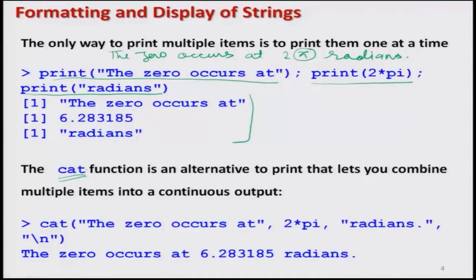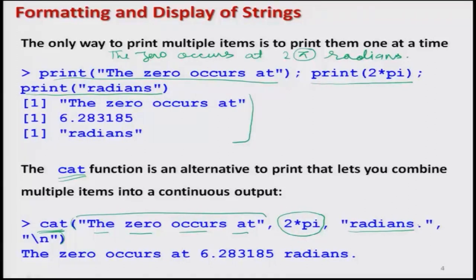Now, I am writing cat with the arguments inside the brackets. First, I am writing the first string — 'the 0 occurs at' — inside double quotes as a character. Then the value to be computed: 2 times pi, where pi is the default function for getting the value of pi in R. Then inside double quotes I write 'radians'. After radians, I want the output to break and the control to come to the next line, so I use backslash n. Let us execute it and see what happens.